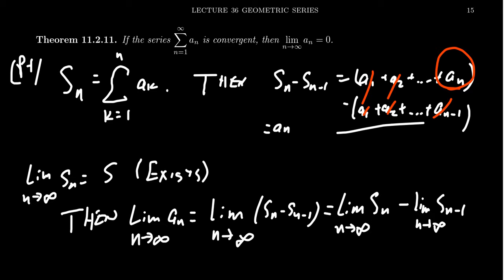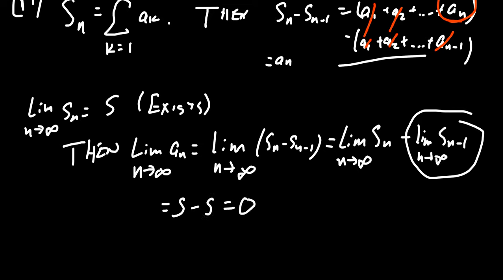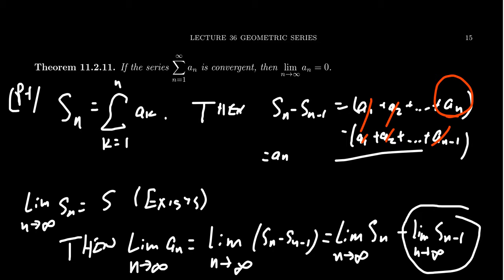As the sequence S sub n is convergent, it converges to the number S. This sequence S sub n minus 1 is just one step behind S sub n, and as n goes to infinity, that difference of one step makes no difference. If S sub n goes to S, then S sub n minus 1 likewise goes to S. So you end up with S minus S, which equals 0. This verifies the statement: if the series is convergent, then the sequence must also be convergent and must converge to 0.